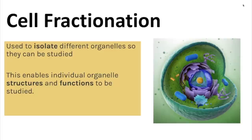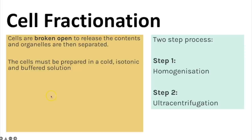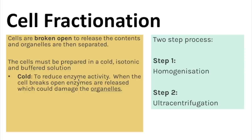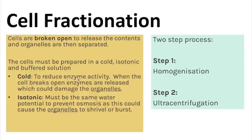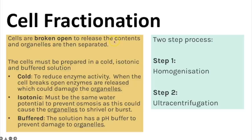Cell fractionation is used to isolate different organelles for further study. First, cells are broken open to release their contents. The cells must be prepared in a cold, isotonic and buffered solution. It must be cold to reduce enzyme activity — breaking the cell releases enzymes that might otherwise damage the organelles. It must be isotonic so that organelles don't burst or shrivel from osmosis. It must be buffered so that extreme pH doesn't damage the organelles.